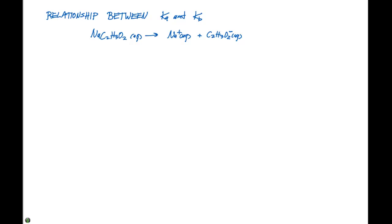So here we're going to use sodium acetate and acetic acid to show you the relationship between Ka and Kb. Sodium acetate is a salt which means it's going to be a strong electrolyte in solution. So we're going to have a full dissociation to Na plus plus C2H3O2 minus.